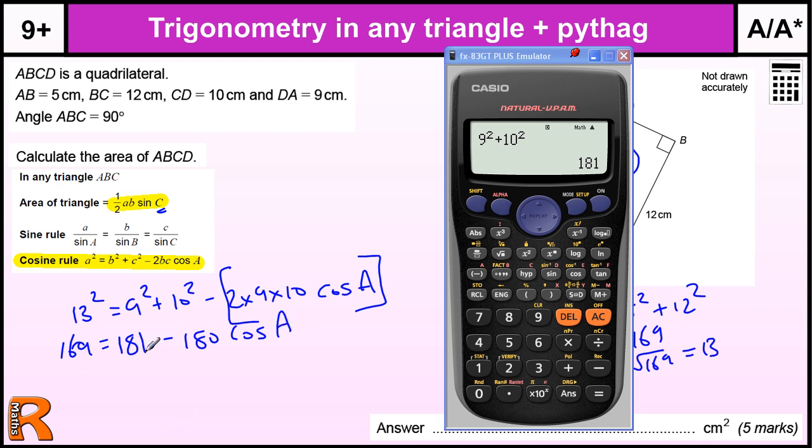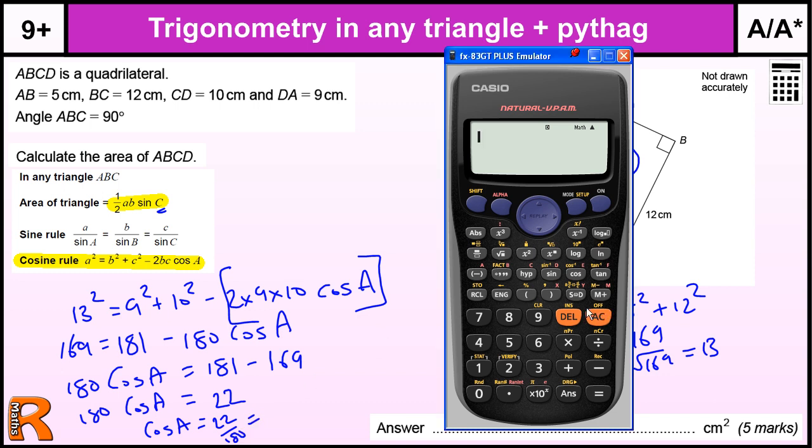So then we need to solve this. If we take this over to the other side it becomes plus 180 cos A, and then we take the 169 onto this side we get 181 minus 169, and that gives us 22. So 180 cos A is 22, so the cos of A equals 22 over 180. So to find A we need to do cos to the minus 1 of 22 over 180, close the brackets. That gives us 82.979 degrees.